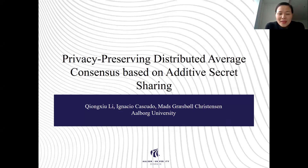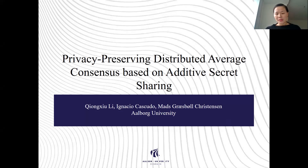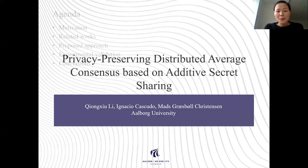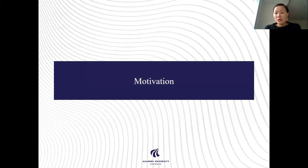Hi, this is Chong Xiu, and I'm really glad that I can share my work about privacy preserving distributed average consensus using additive secret sharing. It is already published at ICASSP 2019, and this is a co-work with Ignacio Cascuno and Max Christensen. I will follow this agenda to introduce my work — let's start with the motivation.